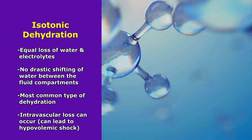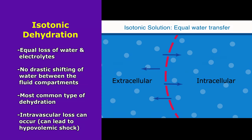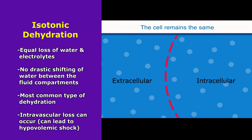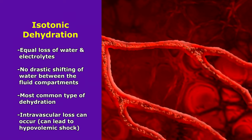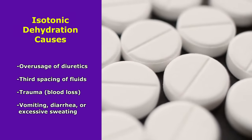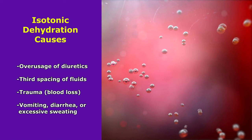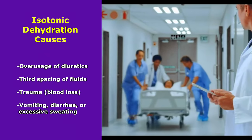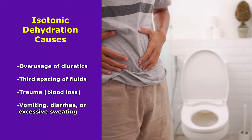Isotonic dehydration involves an equal loss of water and electrolytes — ISO means equal — with no drastic fluid shifting between compartments. This is the most common type of dehydration. The major problem is intravascular loss, which impairs the ability to pump fluid throughout the body and can lead to hypovolemic shock. Causes include overuse of diuretics, third spacing, trauma such as bleeding, vomiting, diarrhea, or excessive sweating.